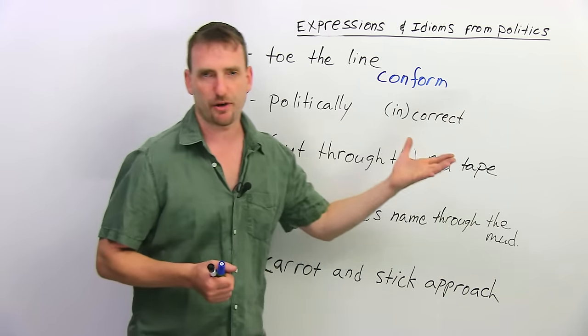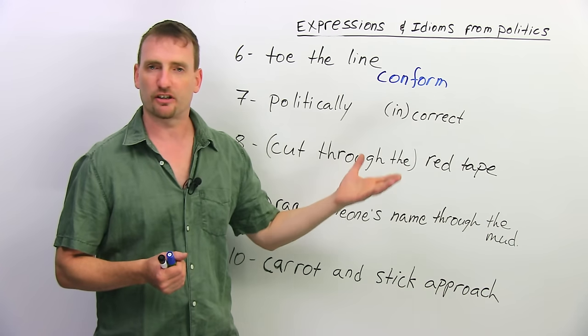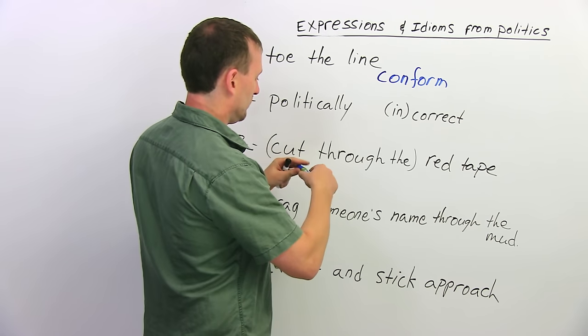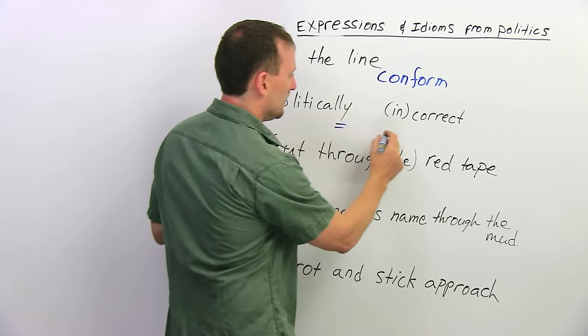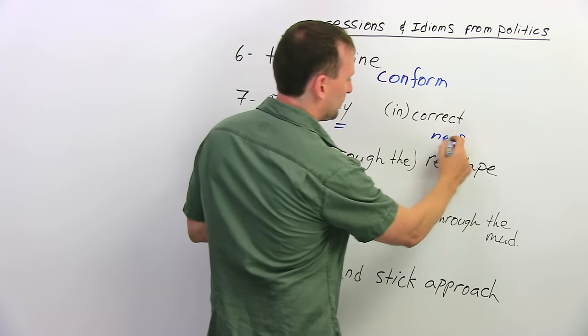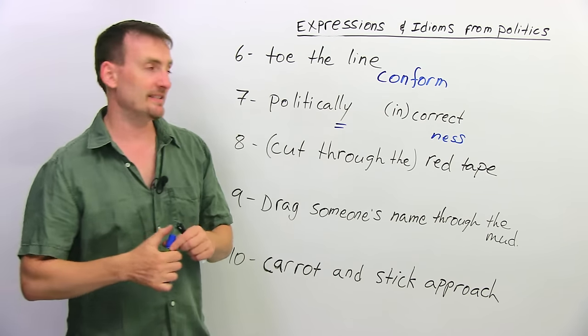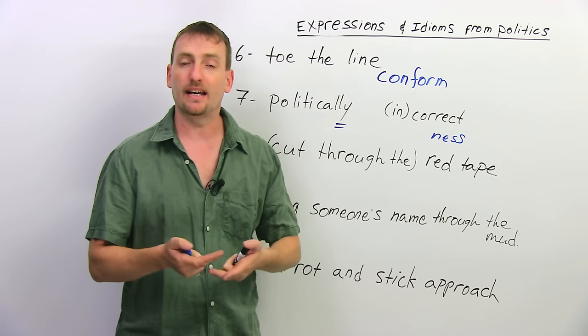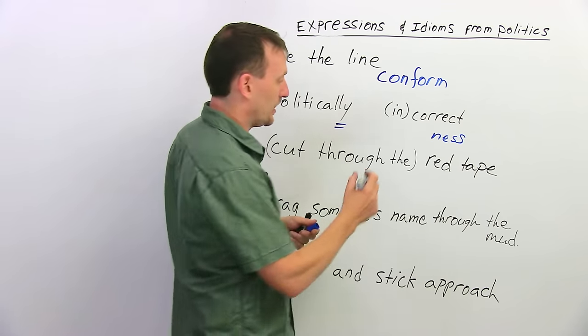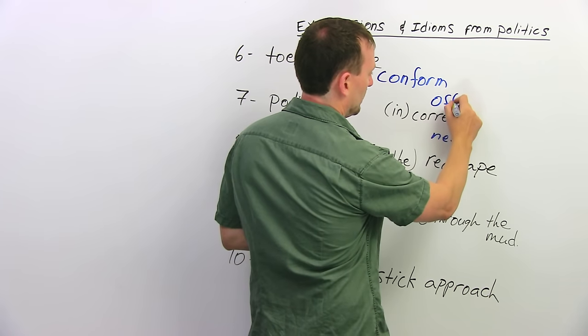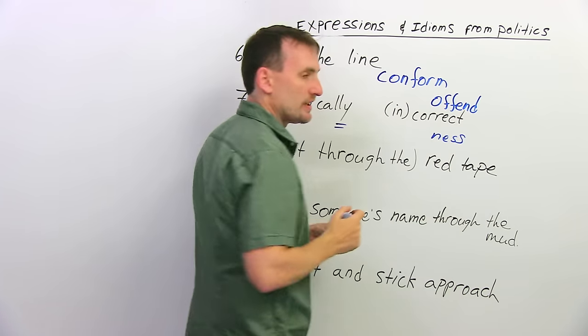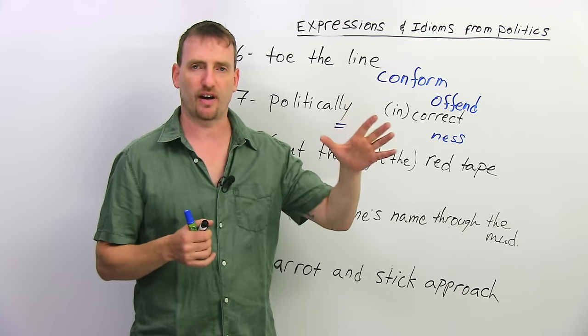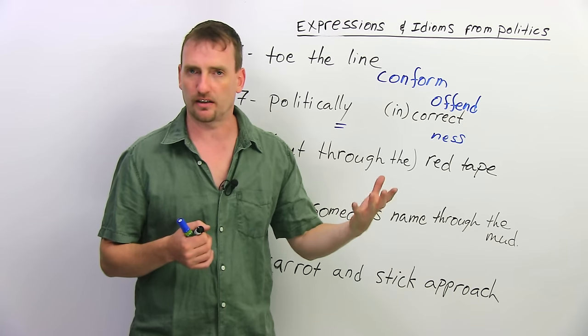Now, I'm sure you've heard this expression many times. Politically correct, politically incorrect. Political correctness. Now basically what this means is speaking or expressing opinions in a way that doesn't offend anyone. So if you're politically correct, it means you're not offending anyone. You're not saying anything that somebody will find hurtful or insulting or whatever.